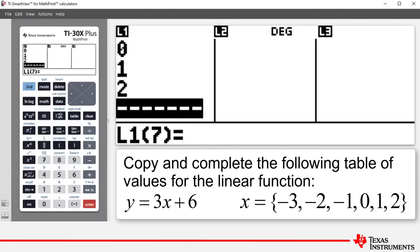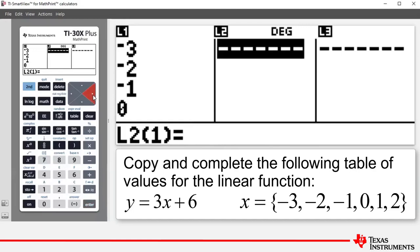What we need to do now is to move to list 2. So we're going to press our arrow button to the right and that takes us to the top of L2 or list 2. And now we're going to, in this list, enter a formula. And the formula is going to be related to our linear function 3x plus 6 or y equals 3x plus 6.